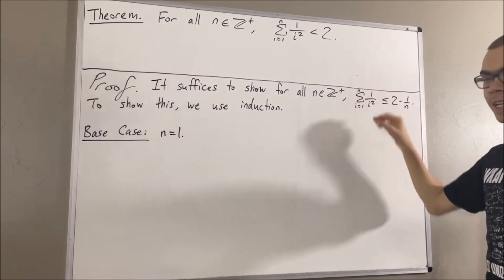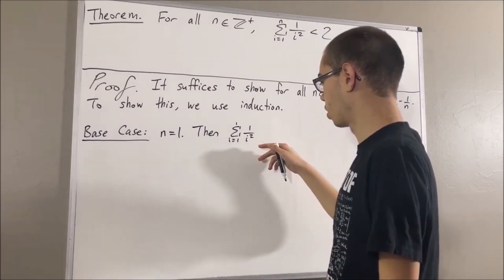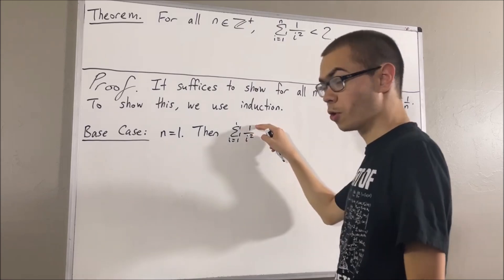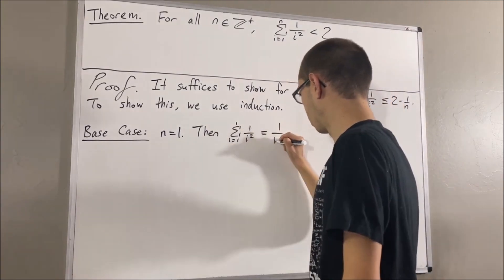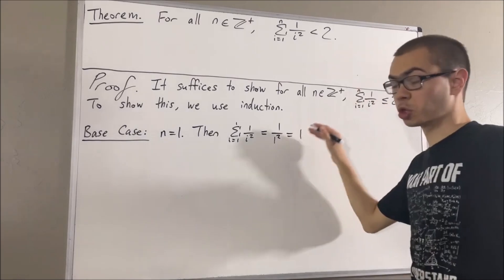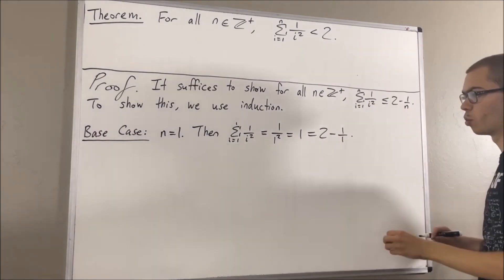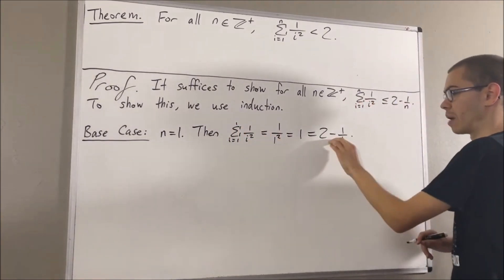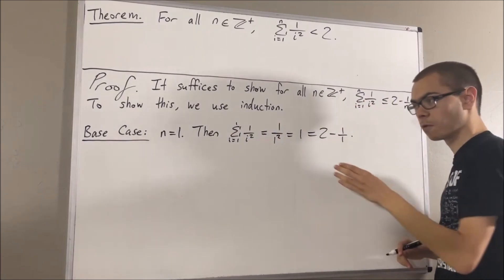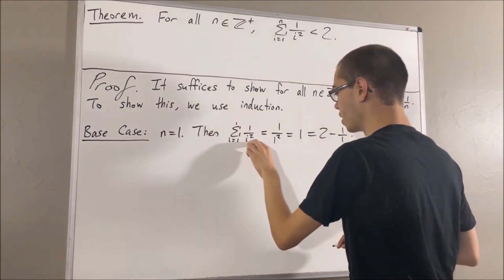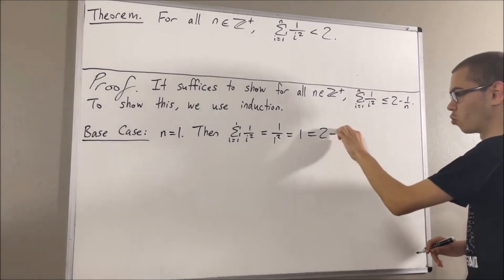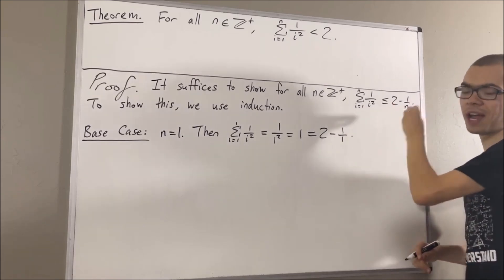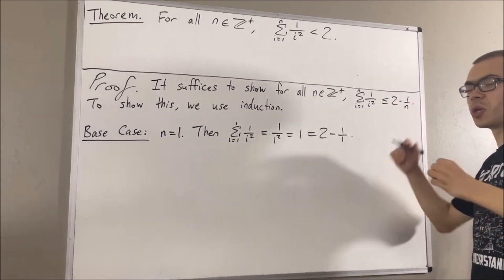Well, let's start by writing the left-hand side. Since the lower and upper bound of the sum are the same, we know that this is just going to be equal to 1 over 1 squared, which is just equal to 1, and this is equal to 2 minus 1 over 1. So we have shown that the sum from i equals 1 to 1 of 1 over i squared is equal to 2 minus 1 over 1, and therefore is less than or equal to 2 minus 1 over 1. So this completes the base case.